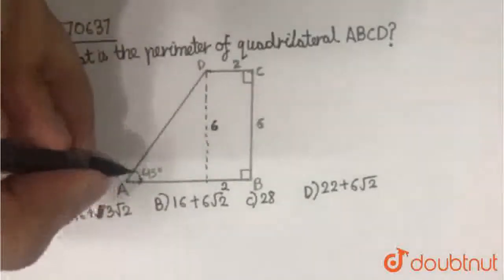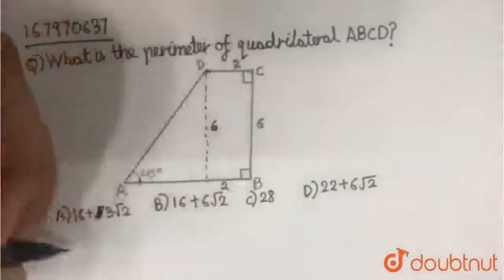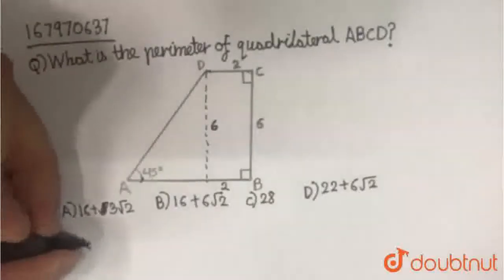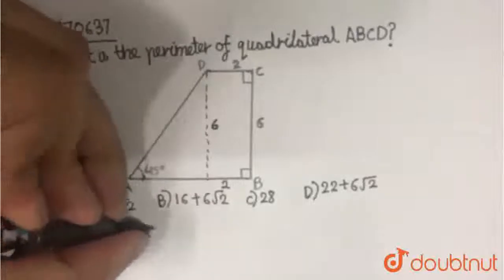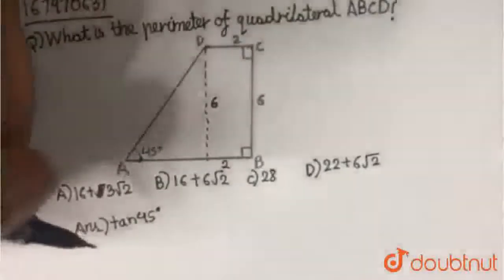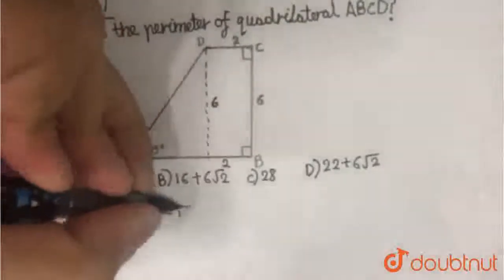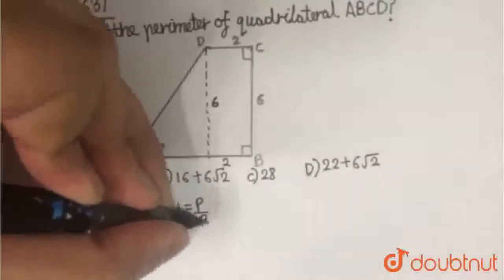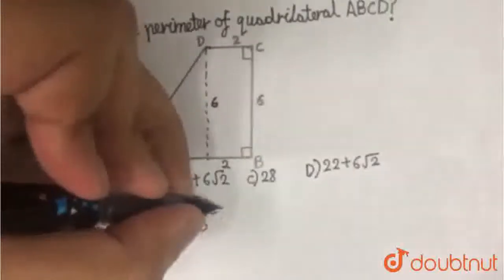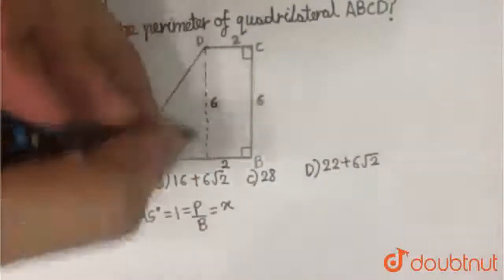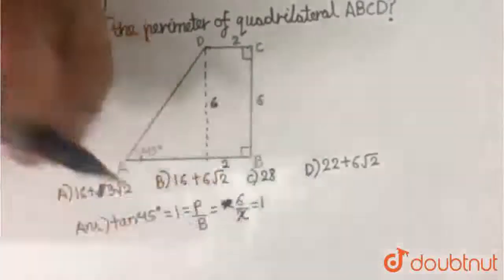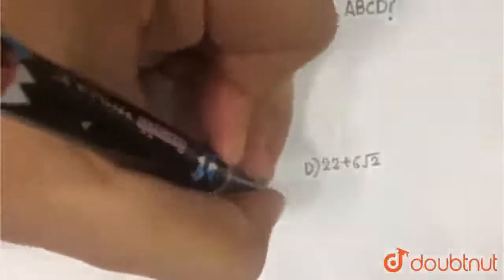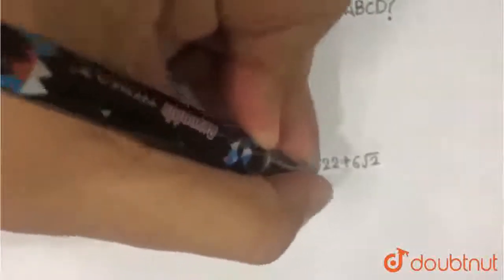Now, this is given to be 45 degrees. We know that tan 45 degrees is equal to 1, which means perpendicular upon base. The perpendicular out here is 6, so 6 upon x is equal to 1, which gives us x is equal to 6.